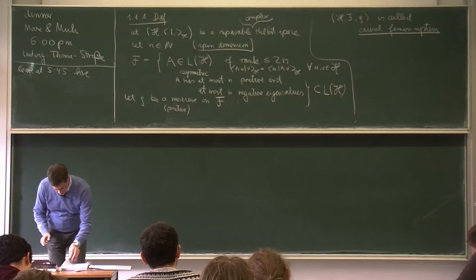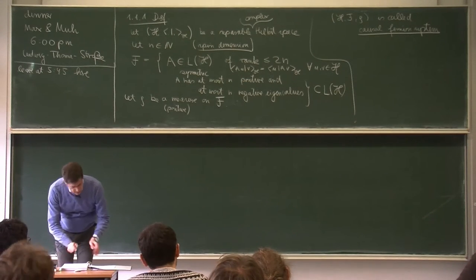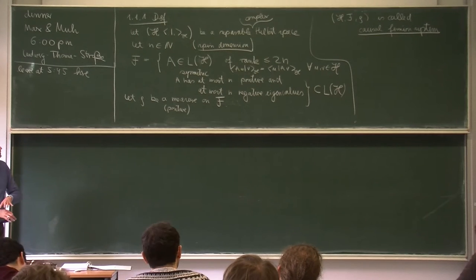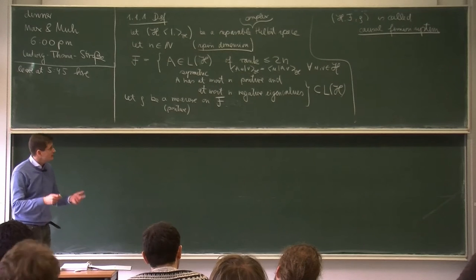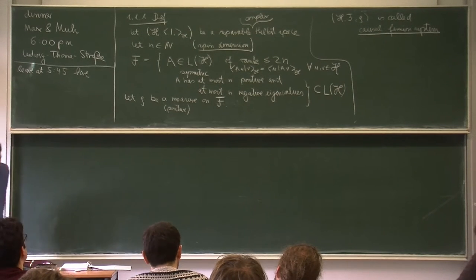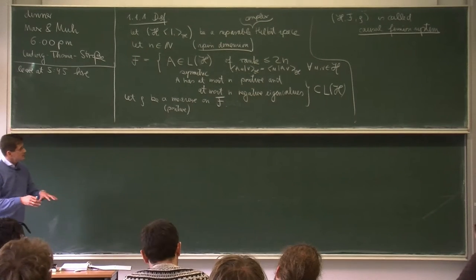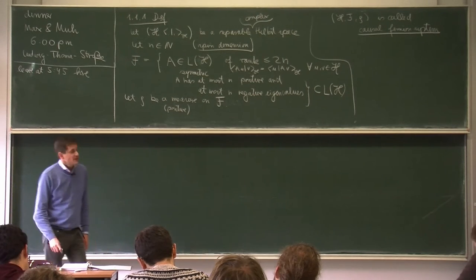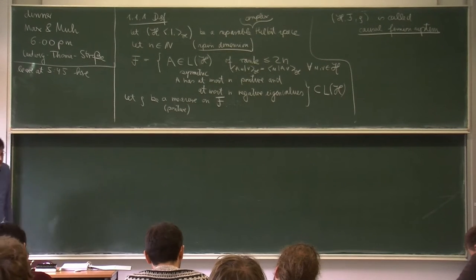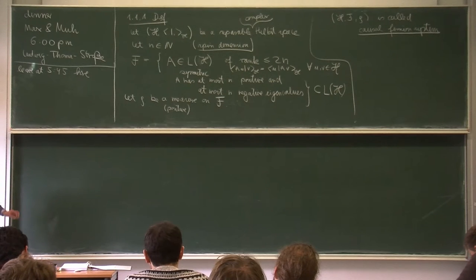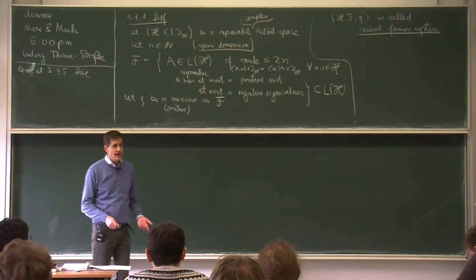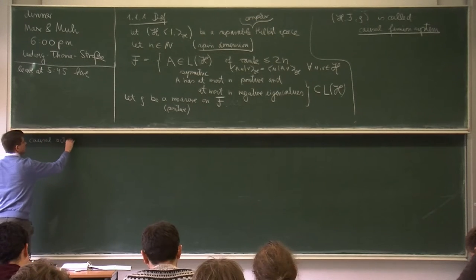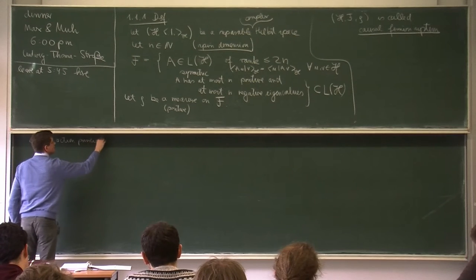This is the general definition. As I will explain tomorrow, a Causal Fermion System describes spacetime together with all additional structures — wave functions, fields, and so on. Now we need a criterion to decide which spacetime is realizable in nature, i.e., what is a physical spacetime. To this end, one formulates physical equations by imposing that rho should be a minimizer of the Causal Action Principle — a variational principle.